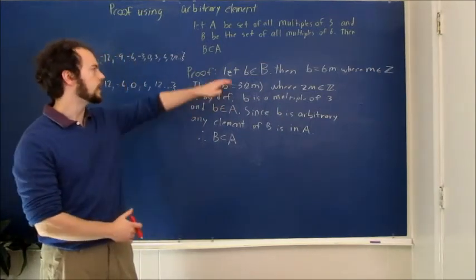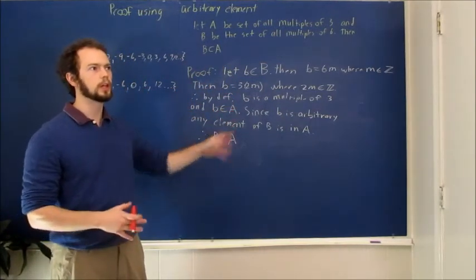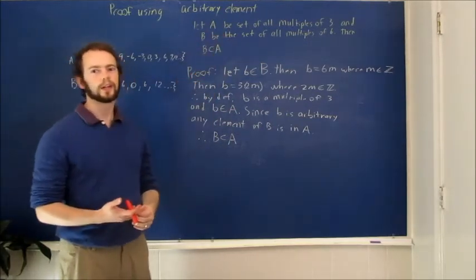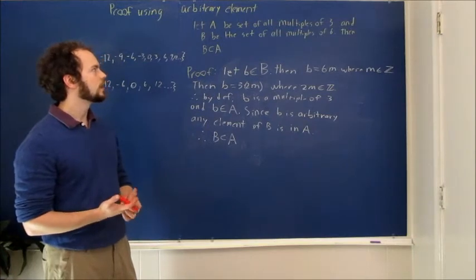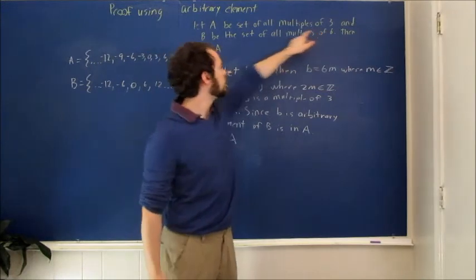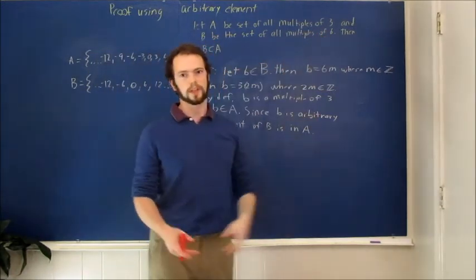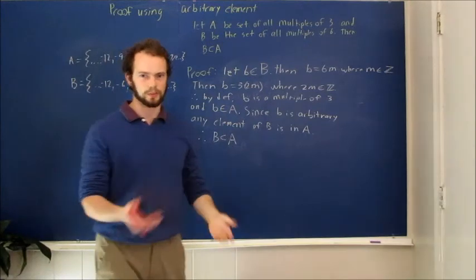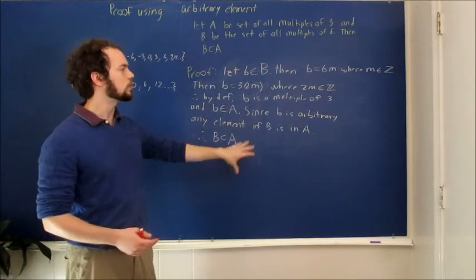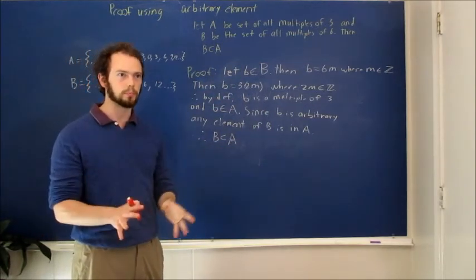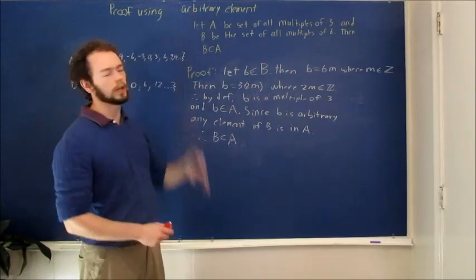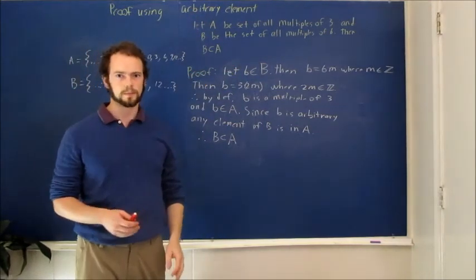All we did here is we took your intuitive understanding of why this must be true—this idea that any element in B must be a multiple of 6, and every multiple of 6 is a multiple of 3, so anything in B must be in A. That's essentially just what I did here. That's a simple use of an arbitrary element.